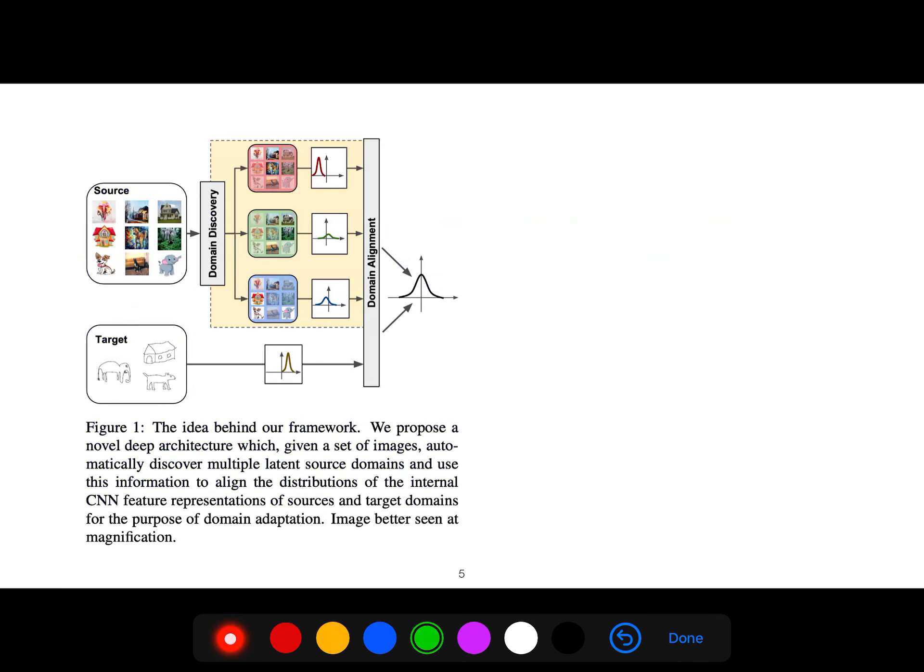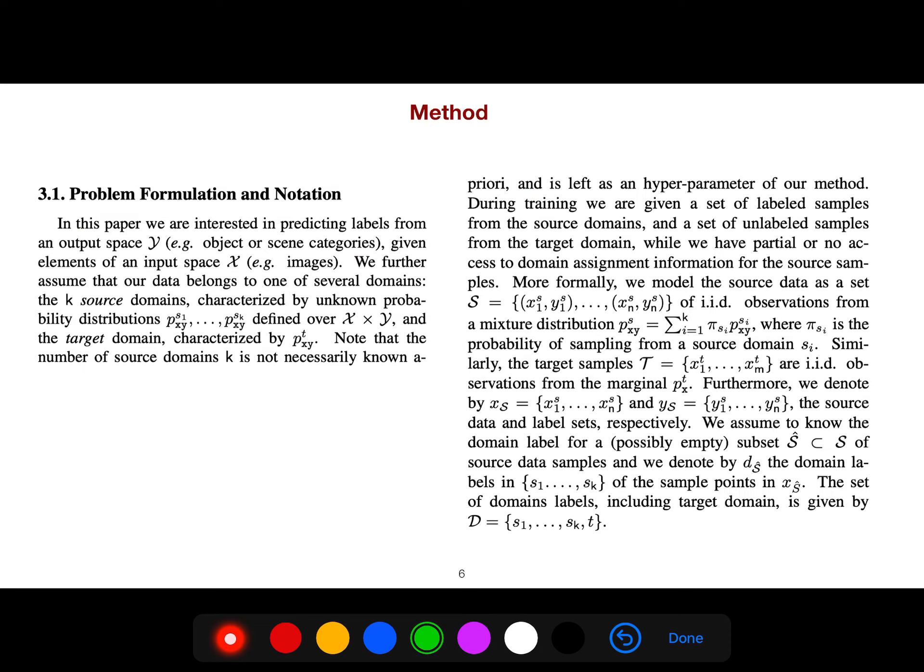You see the idea behind our framework. We propose a novel deep architecture which, given a set of images, automatically discovers multiple latent source domains and uses this information to align the distributions of internal CNN feature representations of sources and target domains for the purpose of domain adaptation.